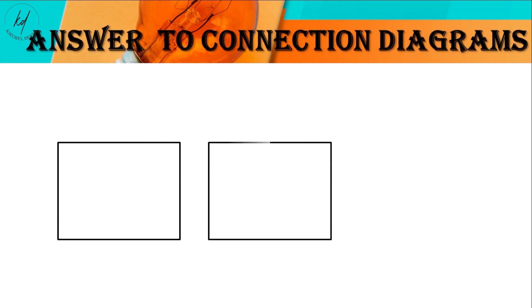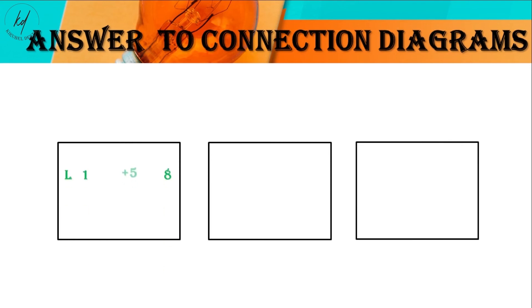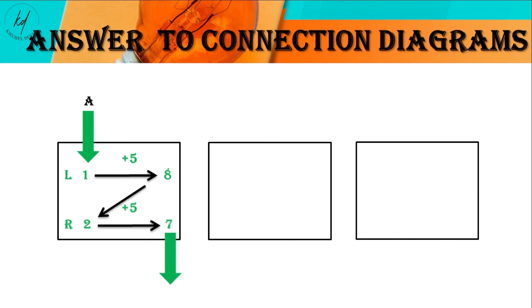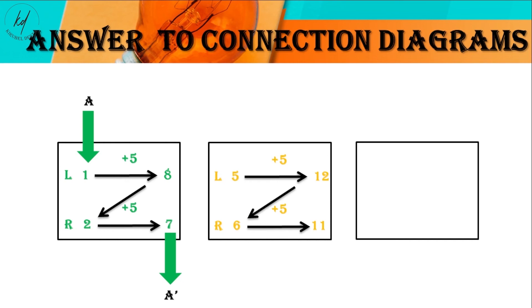Connection diagram: the three rectangles represent the number of coil groups — one coil group or rectangle per phase. Starting coil insertion from slot 1, add the shortest coil span of 5 to the left, then insert the remaining coil side into slot 8. The second slot is next for the second coil in phase A's coil group, so add the coil span to the right to get slot 7. Coil groups in each phase are interconnected by joining unlike leads — start to finish or finish to start. Here, slot 8 is the end of the first coil and slot 2 is the start of the second coil, so they can be interconnected. Phase A starts at slot 1, and the end of the second coil in slot 7 becomes A prime.